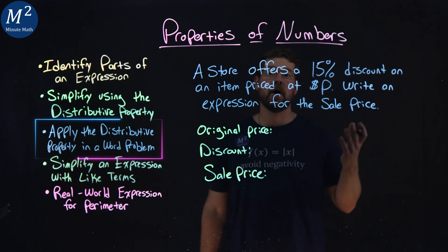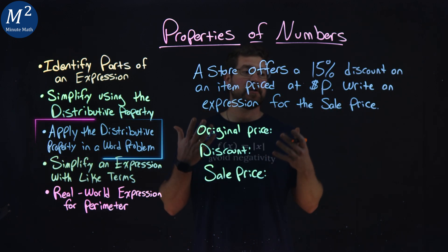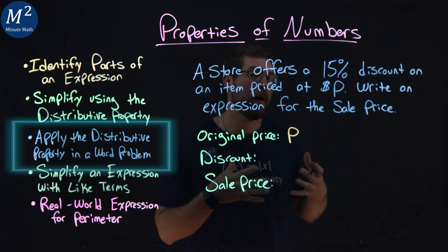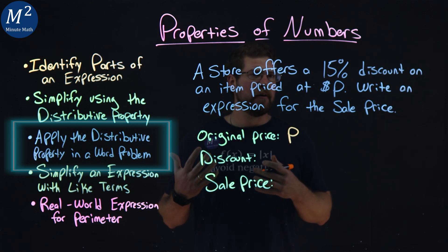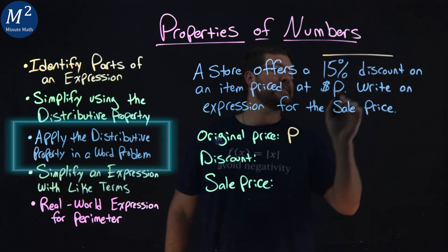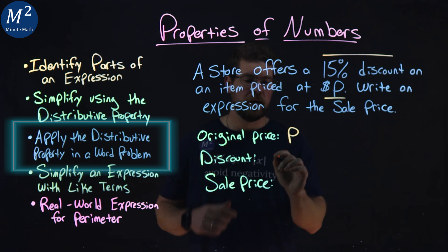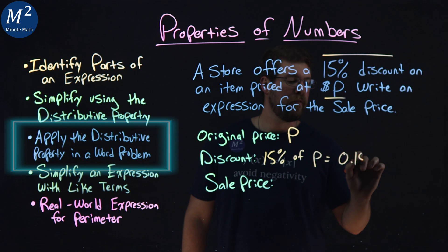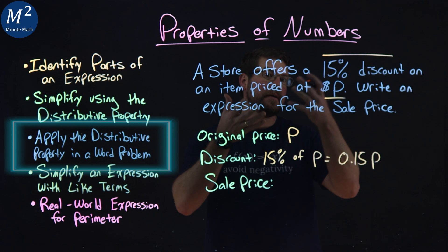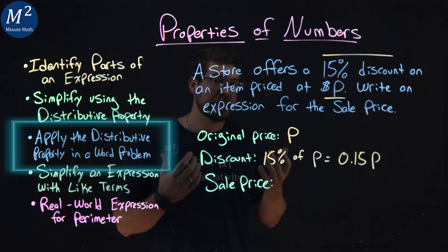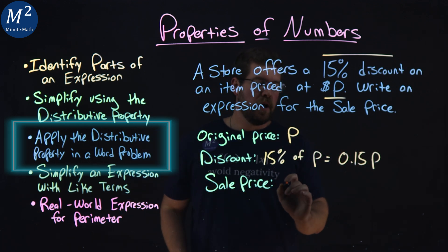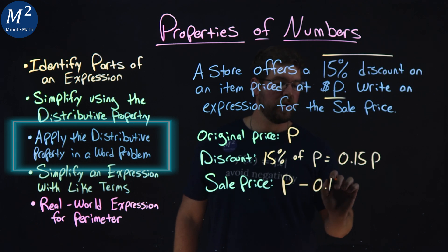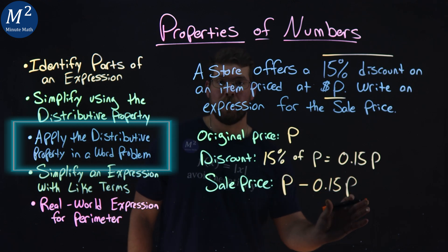A store offers a 15% discount on an item priced at p dollars. Write an expression for the sale price. First, let's identify the original price — they tell us it's p dollars, so p represents the original price. What about our discount? We want to find a discount, and they tell us it's 15% — 15% of our original price p. We can write that percent as a decimal and multiply it by p, the original price. The sale price is 15% off, so to calculate the sale price we're going to take our original price p minus the discount, which is 0.15p. It's our original price minus the discount amount.